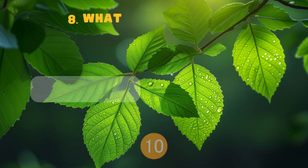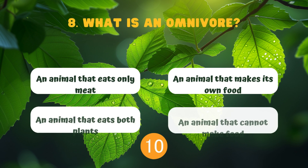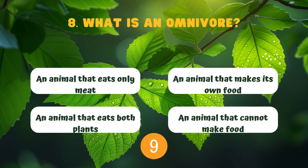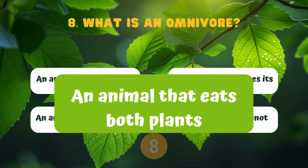What is an omnivore? An animal that eats only meat. An animal that makes its own food. An animal that eats both plants. An animal that cannot make food.